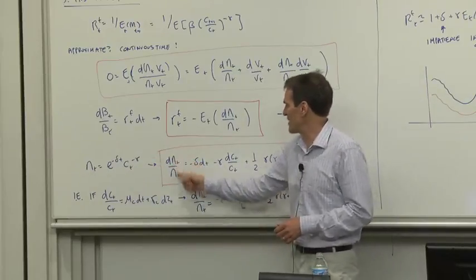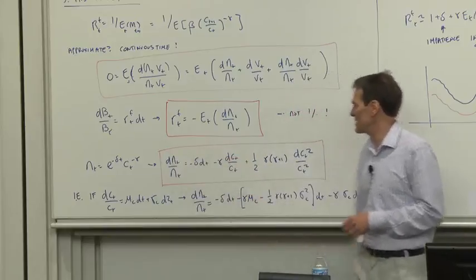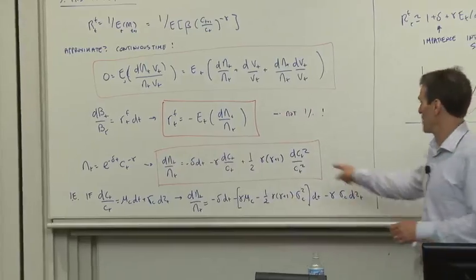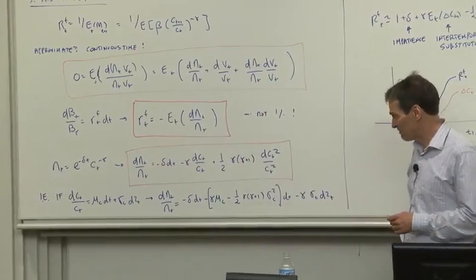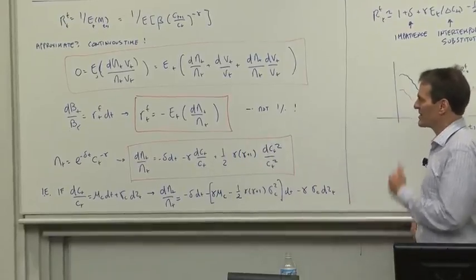So what does Ito's lemma give us? We have the derivative with respect to time, the derivative with respect to consumption, and the second derivative with respect to consumption. Don't forget those Ito's lemma terms. That's a general result that'll be useful for us.